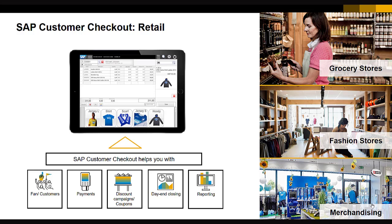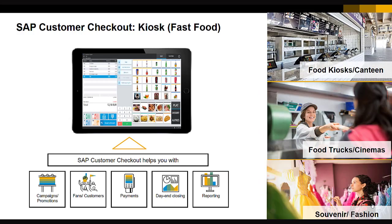The second user interface mode is the kiosk mode, used in food kiosks, canteens, food trucks, cinemas, and souvenir shops. The technological basis is the same as the retail mode — it supports out-of-the-box integration to SAP Business One and is also offline capable. However, the user interface is optimized for the kiosk industry so you can execute your sales process very fast. Normal functionality like time recording and day-end closing is also supported in the kiosk mode.